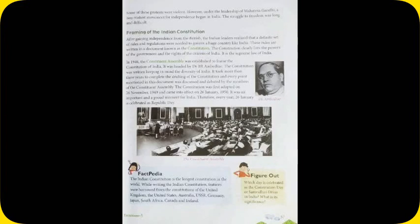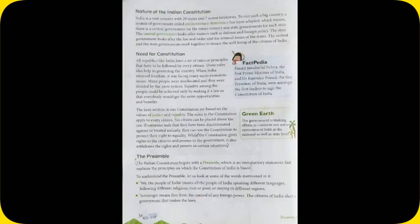Therefore, every year 26th January is celebrated as Republic Day. India is a vast country with 29 states and seven union territories. To run such a big country, a system of government called parliamentary democracy has been adopted, which means there is a central government for the entire country and state governments for each state. The central government looks after matters such as defence and foreign policy, while the state government looks after law and order and the internal issues of the states. The central and state governments work together to ensure the well-being of the citizens of India.